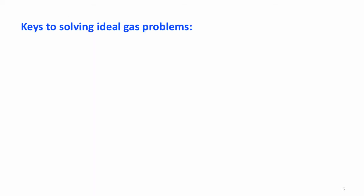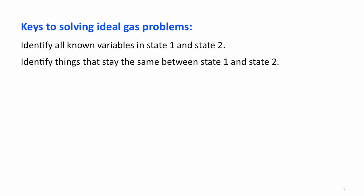Now, the key to solving ideal gas problems. First, identify all your known variables in state 1 and state 2. Next, identify things that stay the same between those two states. Third, look for the processes that change the variables between state 1 and state 2.